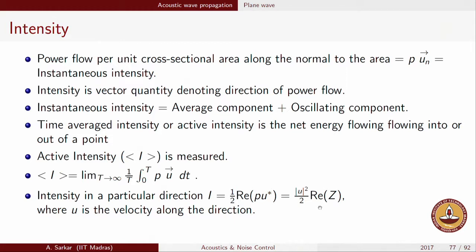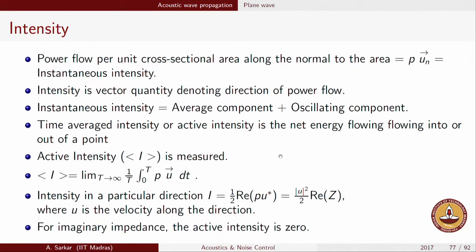For a travelling wave, the impedance is the characteristic impedance ρ₀C, which is a perfectly real number. Therefore, the active intensity for a travelling wave is U² ρ₀C / 2, or equivalently in terms of pressure. Today we shall see counter-intuitive cases where the active intensity can be zero. Before that, let us take a few illustrations.